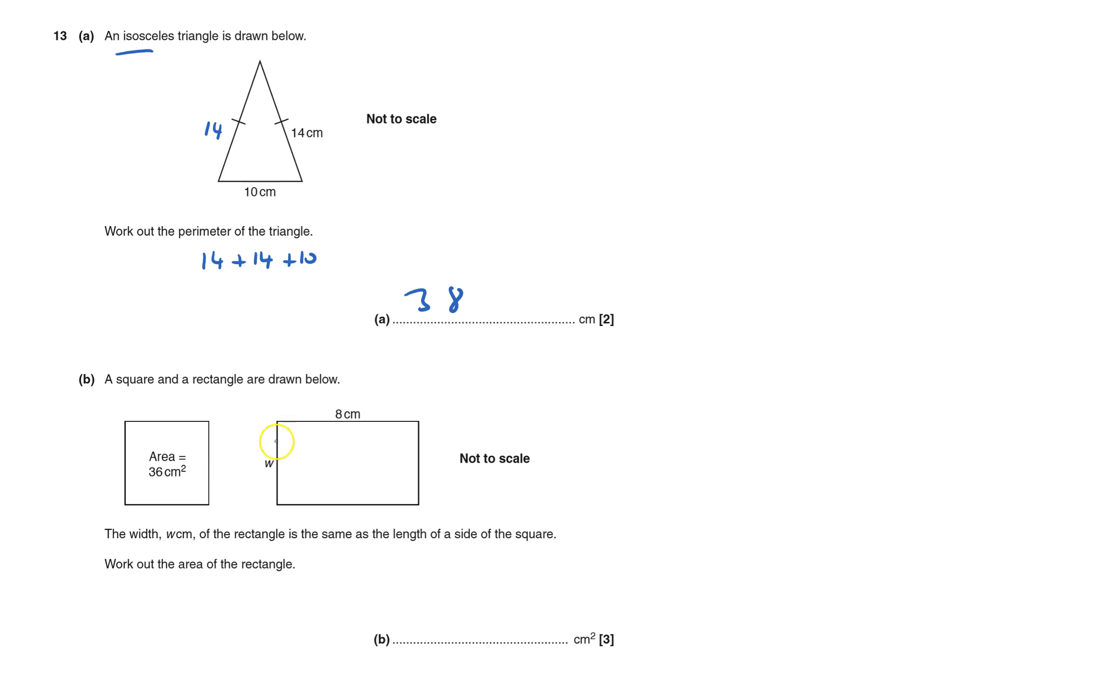So this length here is the same as this bit here. We know this is a square so this side times this side must be 36. So each of these must be 6.